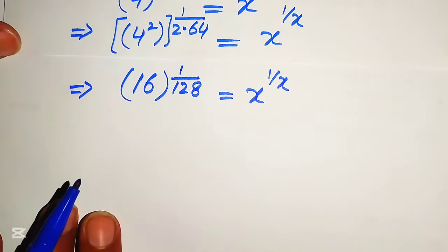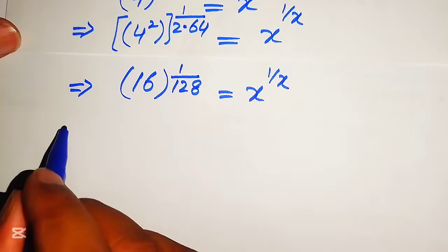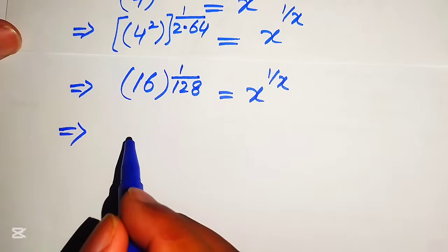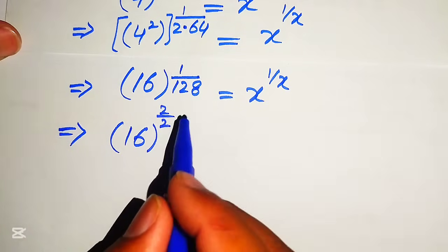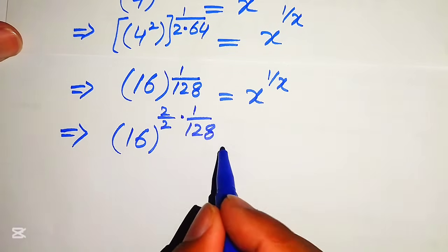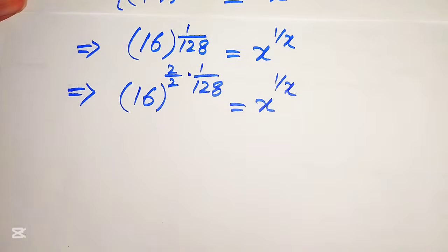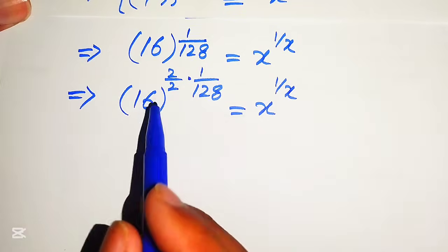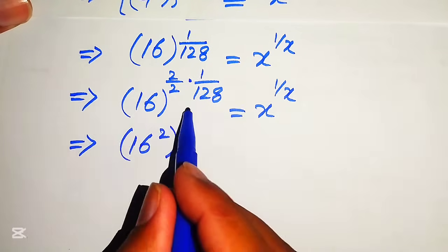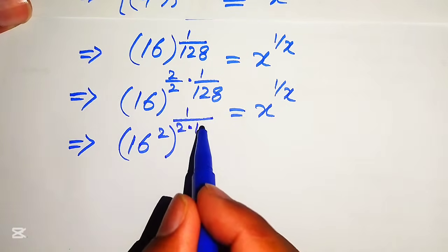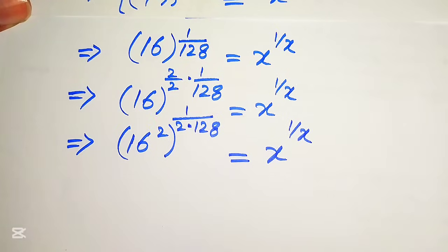We repeat the process again because the exponent is still not the reciprocal of its base. We multiply and divide the exponent of 16 by 2, writing it as 16 to the power of 2 over 2 multiplied by 1 over 128 equals x to the power of 1 over x. Moving 2 inside the term gives 16 squared to the power of 1 over 256 equals x to the power of 1 over x.